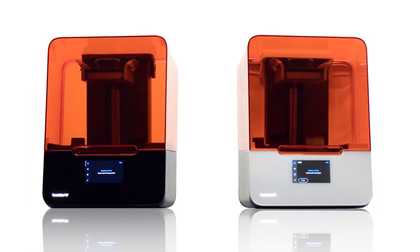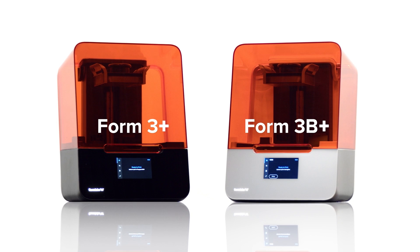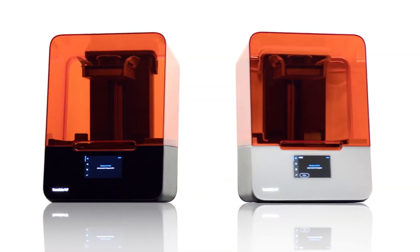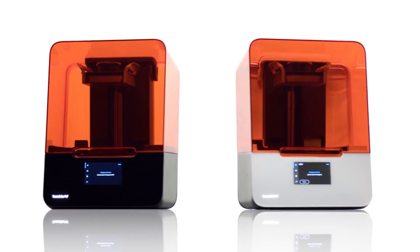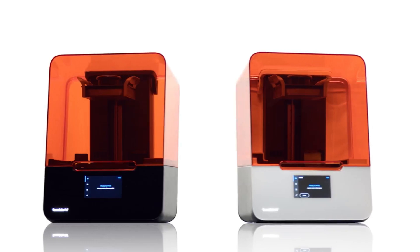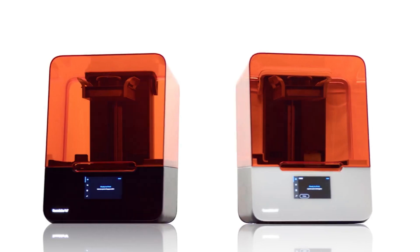The Form 3 Plus improves the ease and speed of printing over its predecessor, the Form 3, which was already our top choice for a resin-based 3D printer for professionals. There are cheaper options such as the Photon Mono X, but they require a lot more tweaking than the Form 3 Plus.